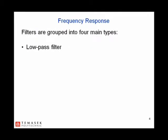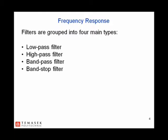Filters are grouped into four main types. Low pass filter allows low frequency signals to pass while attenuating signals beyond the cutoff frequency. High pass filter allows high frequency signals to pass while attenuating signals below the cutoff frequency. Band pass filter allows signals from a frequency band to pass while attenuating all other signals. Band stop filter attenuates signals from a frequency band while allowing all other signals to pass.